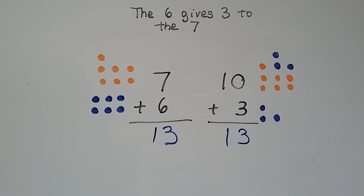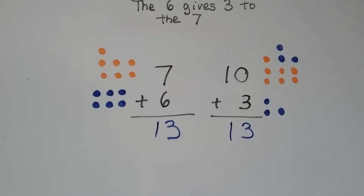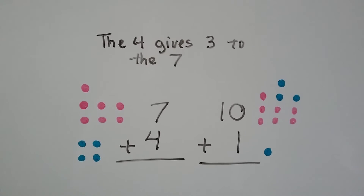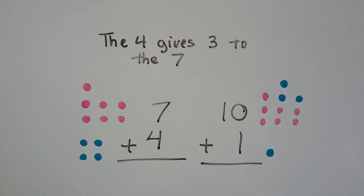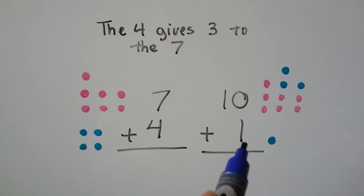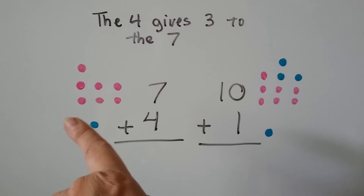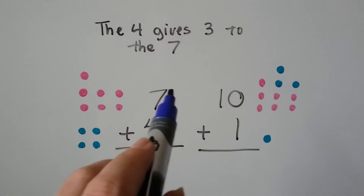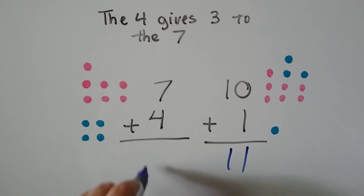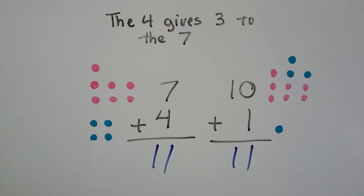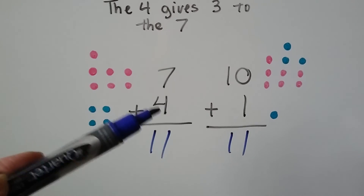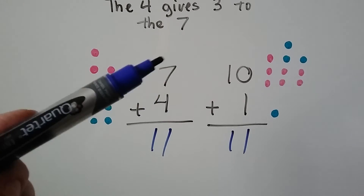The 6 gives 3 to the 7 to make it a 10 and it became a 3. Now we have 7 plus 4. The 4 is going to give 3 to the 7; it's going to become a 1 when we take those 3 away, and the 7 is going to become a 10. 10 plus 1 is 11, so 7 plus 4 must be 11.